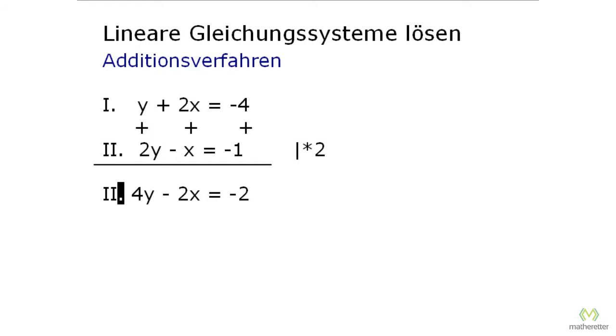And then, since it has changed, we write a prime symbol over it. Now we take the first equation again, and compare it. Here it says plus 2x, and here is now minus 2x. And indeed, we can now add both equations again.